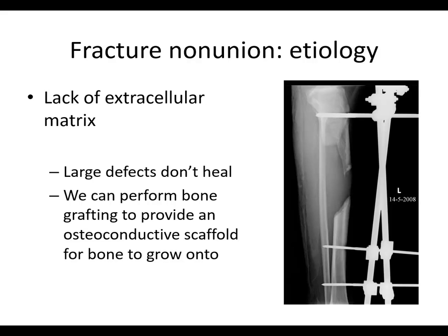One reason for atrophic nonunion is lack of extracellular matrix. A large defect won't heal because there's no matrix for new bone to form on top of. Here you can do bone grafting — give it a scaffold for bone to grow onto.